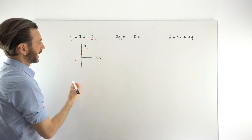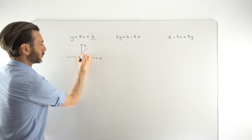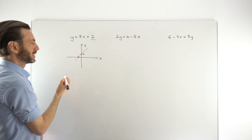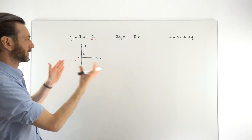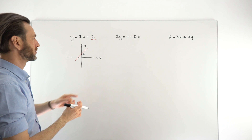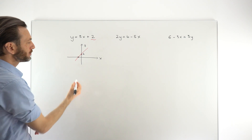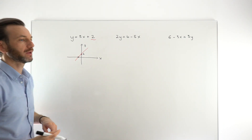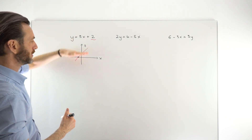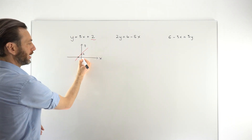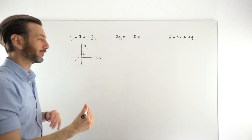Just looking at that sketch, that point where the line crosses the x-axis looks to be roughly around minus 2 or minus 3 somewhere in that region — definitely not minus 10 or a positive number. Now, because that crossing point is on the x-axis, it must have a y-coordinate of 0. All of the points on the x-axis have a y-value of 0.